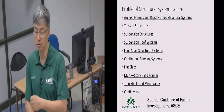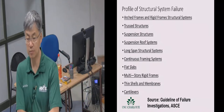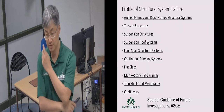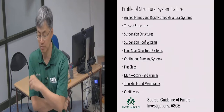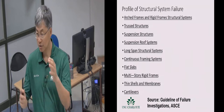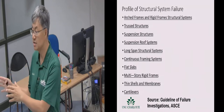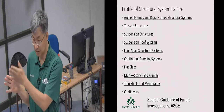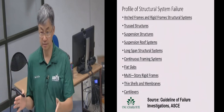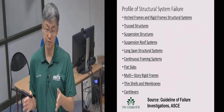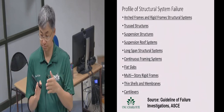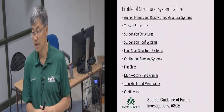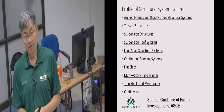The list also includes arched frames, rigid frames, truss suspension structures, suspension roof systems, long-span structural systems, continuous frameworks, flat slabs, multi-story rigid frames, thin shells or walls, and membranes and cantilever structures. You quickly realize that when we talk about the profile of a system failure, we're looking at going back to the basics of structural analysis, and then defining the different failure modes.